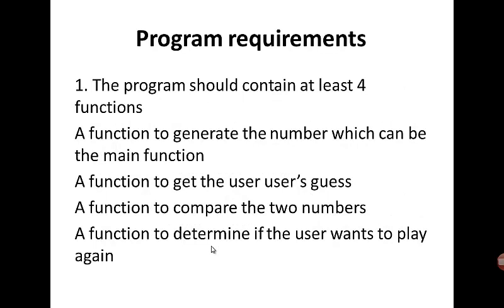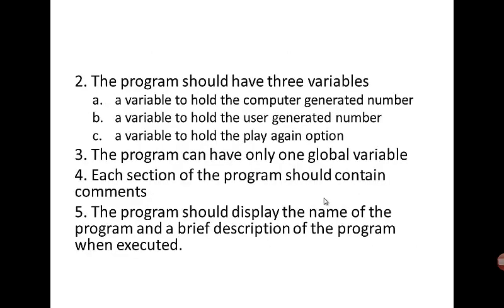Requirements: you need to have at least four functions — a function to generate the number, a function to get the user's guess, a function to compare the two numbers, and a function to determine if the user wants to play again. The program should have three variables: a variable to hold the computer-generated number, a variable to hold the user-generated number, and a variable to hold the play-again option. The program can have only one global variable, and each section should contain comments.